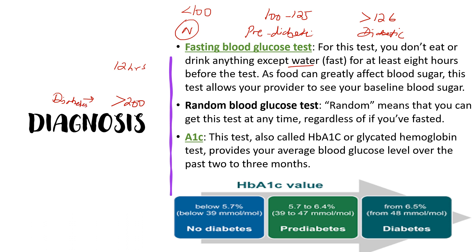An HbA1c or glycated hemoglobin test provides an average blood glucose level over the past two to three months. In clinical practice, this test is generally used to diagnose a patient with diabetes. A normal patient will have a value below 5.7% or 39 millimole per mole. The pre-diabetic state starts from 5.7 to 6.4, and the diabetic state starts from more than 6.5, which is 48 millimole per mole.